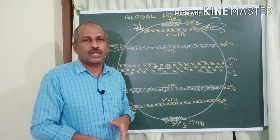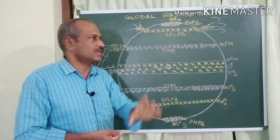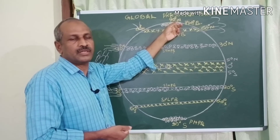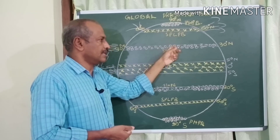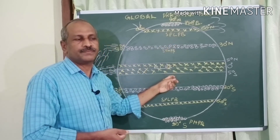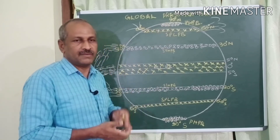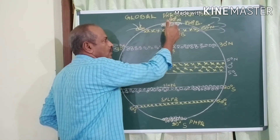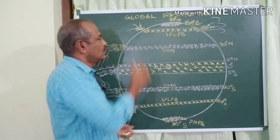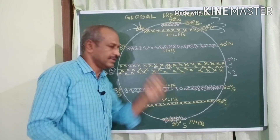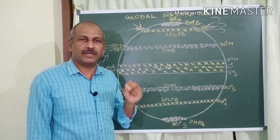In conclusion, these are the seven Global Pressure Belts: Polar High Pressure Belt, Subpolar Low Pressure Belt, Subtropical High Pressure Belt, and Equatorial Low Pressure Belt. Notice that the pressure belts alternate: high, low, high, low, high, low, high. This is the original position of the Global Pressure Belts.